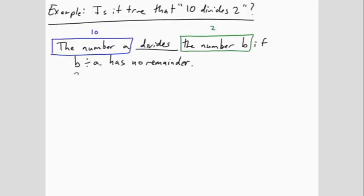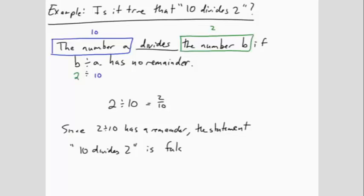So B is 2 and A is 10. We need to see whether 2 divided by 10 has a remainder. The problem says that you have two objects and you're trying to make groups of 10. If you see this, then it's quick to see that 2 divided by 10 is equal to 2 tenths. And that number has a remainder. There are 2 out of 10 pieces needed to make a full grouping. Since 2 divided by 10 has a remainder, the statement 10 divides 2 is false.